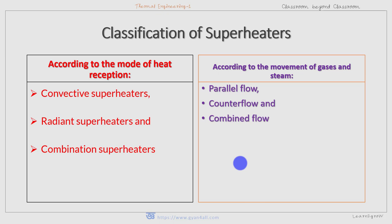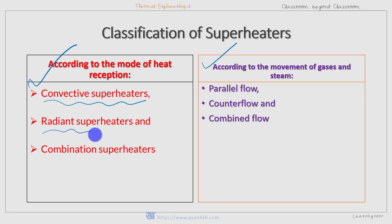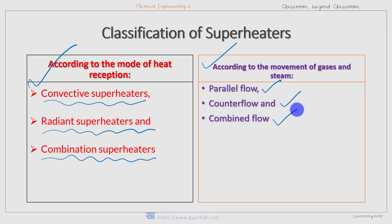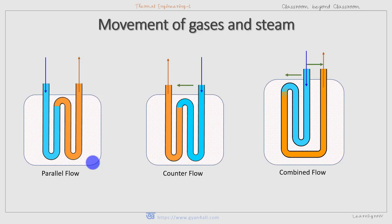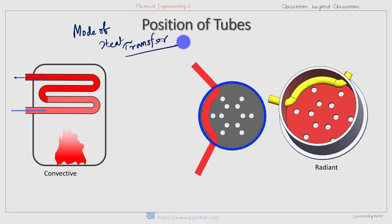Superheaters may be classified based on the mode of heat reception or on the basis of movement of gases and steam. There may be convective superheaters, radiant superheaters, and combination superheaters — that means both convective and radiant. Based on the relative movement or direction of gas and steam, they may be classified as parallel flow, counter flow, and combined flow.